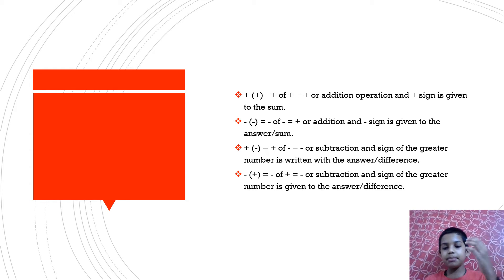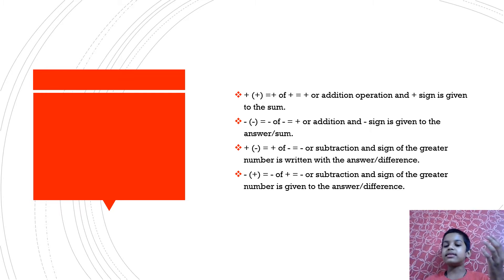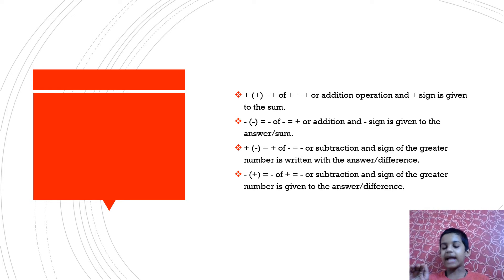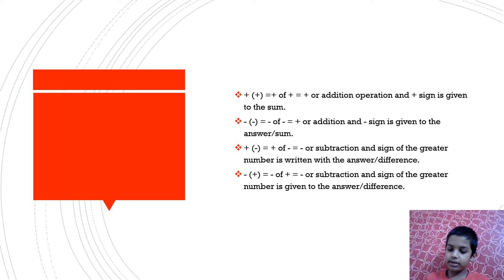We can remember this in a simple way. If the signs are the same, then we need to add and the sign of the greater number is given to the solution. If the signs are different, then we need to subtract and the sign of the greater number is given to the solution.